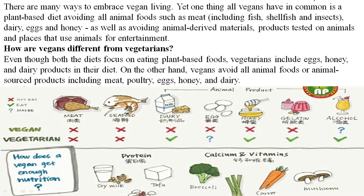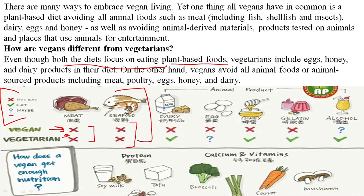Both vegans and vegetarians only consume plant-based foods. We have a checklist with a cross for not eating, a tick for eating, and a question mark for maybe. Both vegans and vegetarians do not consume seafood, insects, meat, chicken, or mutton. However, vegetarians do consume dairy products, honey, gelatin, and alcohol. Some vegetarians also consume eggs — these are called eggetarians.